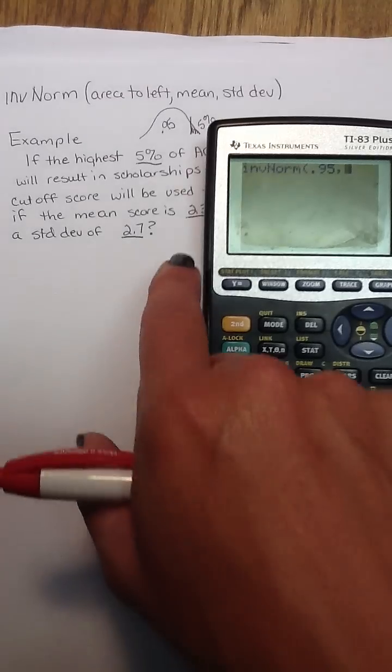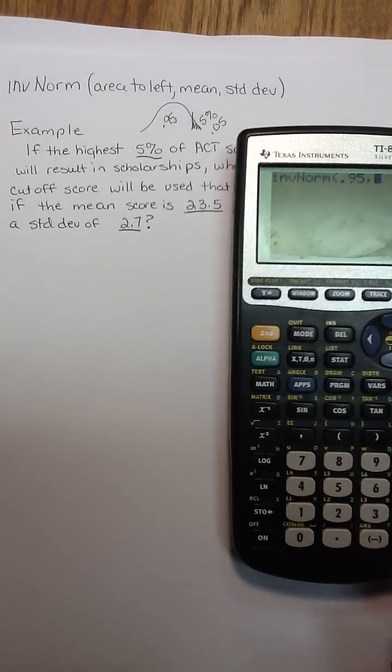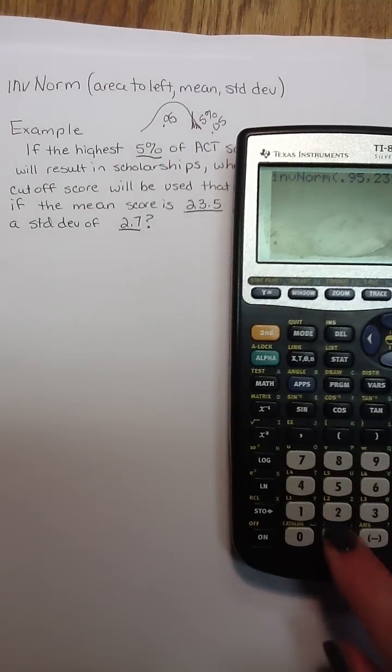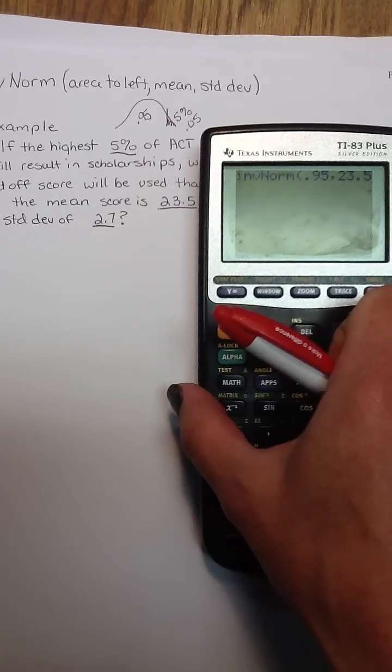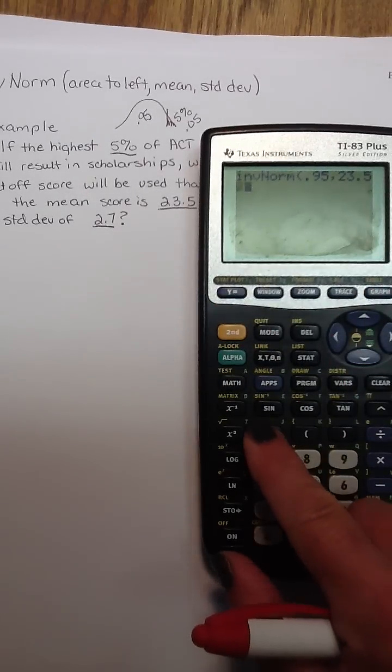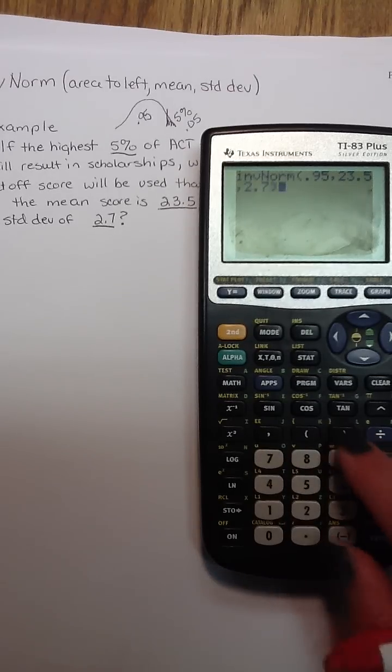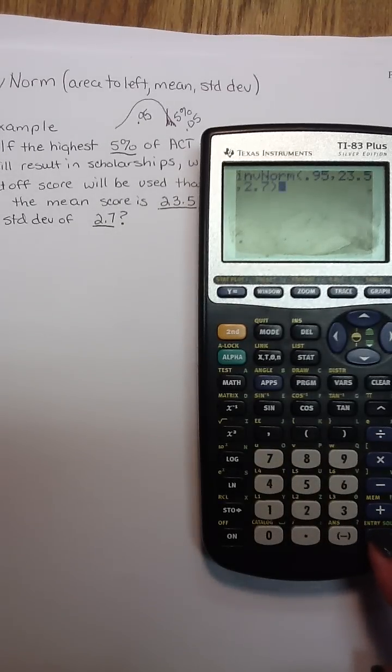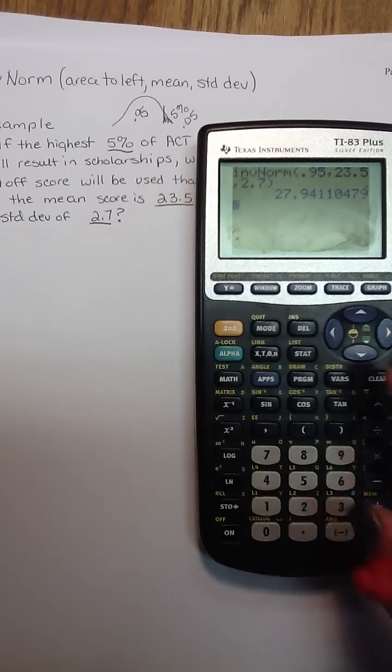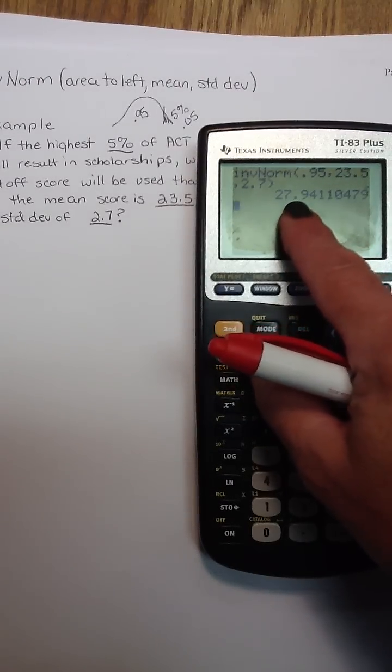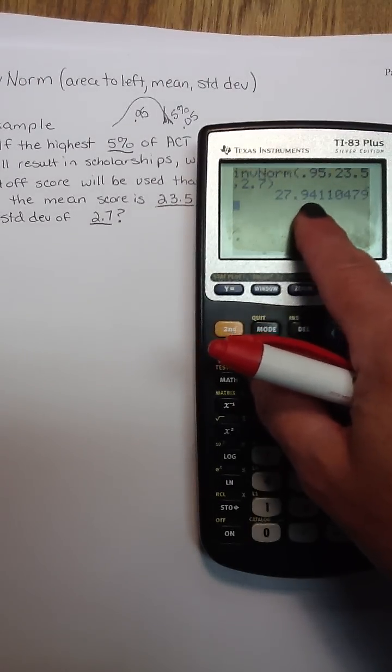Then I will be putting in the mean which is given as 23.5 and separate with a comma for the standard deviation of 2.7 and the parentheses and enter. The cutoff score for that year would be 27.94.